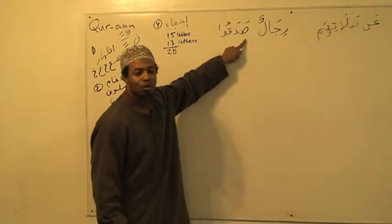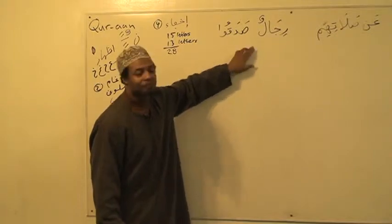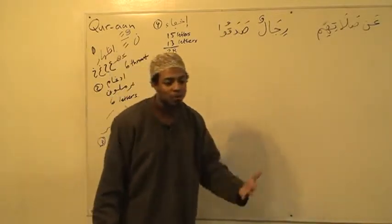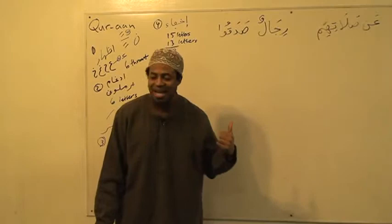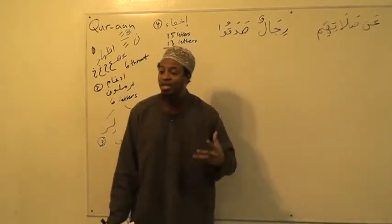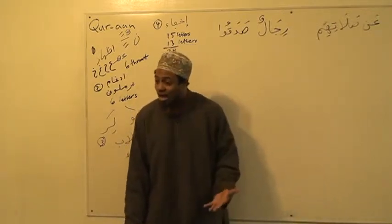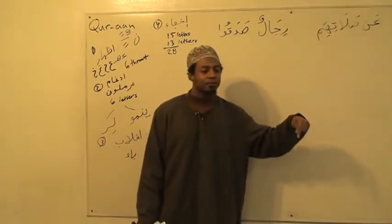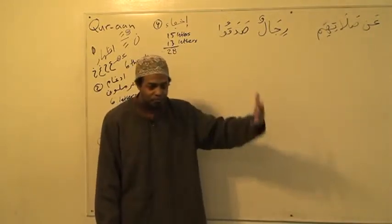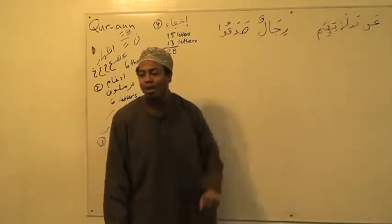The rule is: you name the rule, then say how it's practically done. What's the rule? Ikhfa. Why is it Ikhfa? Because there's a tanween next to a sad, and sad is one of the letters of Ikhfa. What's the proof? The poet who said in the Jazariyya — the classical text — 'Sifh Saad.' We learn from this text, through memorization, that when tanween comes next to a sad, the rule is Ikhfa.